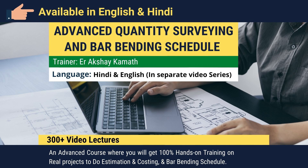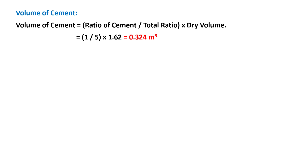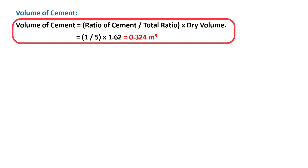To calculate the volume of cement needed, use the formula: Volume of cement = (ratio of cement / total ratio) × dry volume. In our example, the ratio of cement to sand is 1 to 4, so the total ratio is 5. Therefore, volume of cement = (1/5) × 1.62 = 0.324 cubic meters.